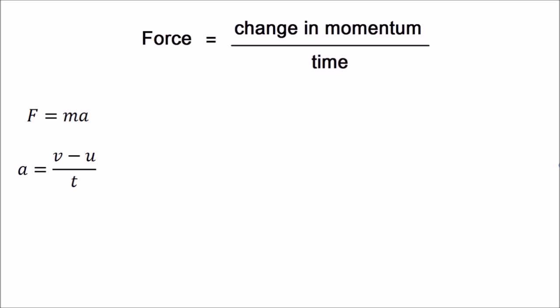And we can express this as an equation. So force equals the change in momentum divided by the time taken. And this is just another version of Newton's second law, F equals MA. Except we use the equation for acceleration, and we substitute in for A. So it will end up looking like this. After we've substituted for A.